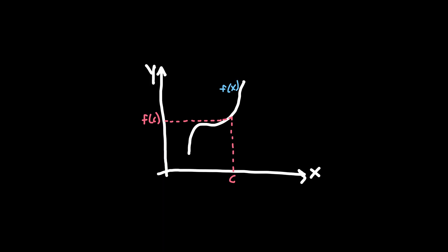So in calculus, a limit refers to the value that a function approaches as the input values get infinitely close to a certain value. It represents the boundary that a function cannot surpass, and it's called a limit because it's the point beyond which the function cannot go. In other words, it's a way to describe what happens to a function as the input gets closer and closer to a certain value without actually plugging in that value.